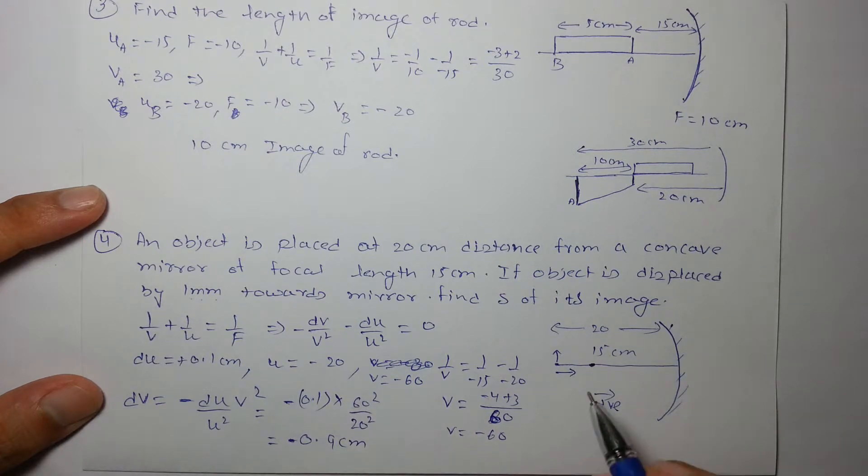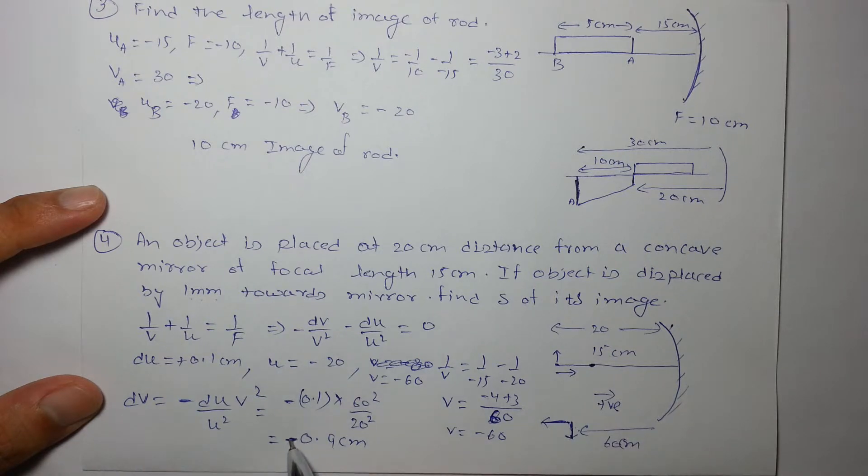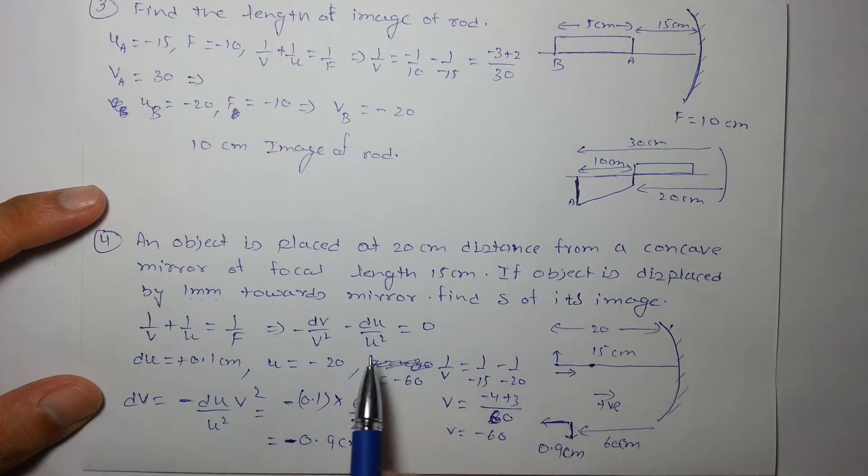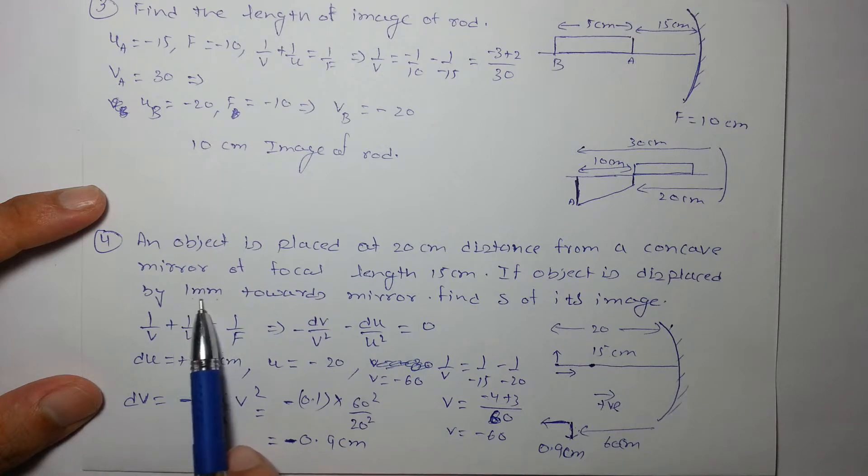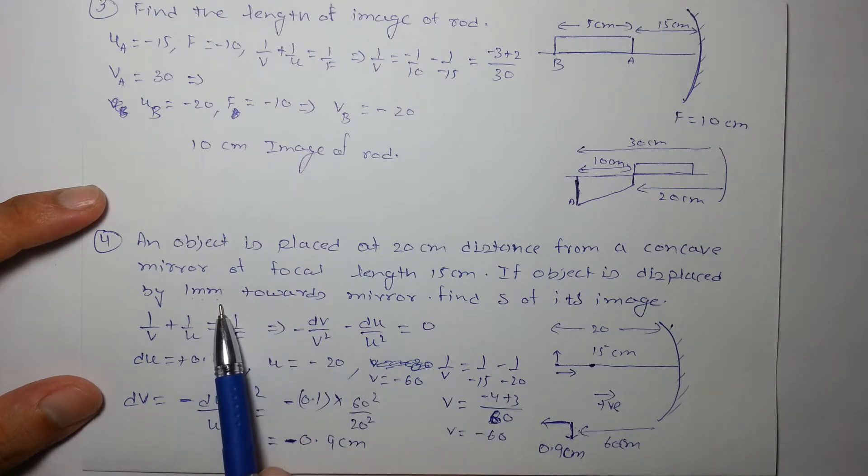This is -0.1 × 60²/20², that will be 0.9 centimeter with a minus sign. So the image will displace - if this is the image, the image will be at 60 centimeter from mirror and it will displace further apart from the mirror because displacement is negative, so it will move opposite to the direction of incident ray by 0.9 centimeter on displacing the object by 1 millimeter towards the mirror.